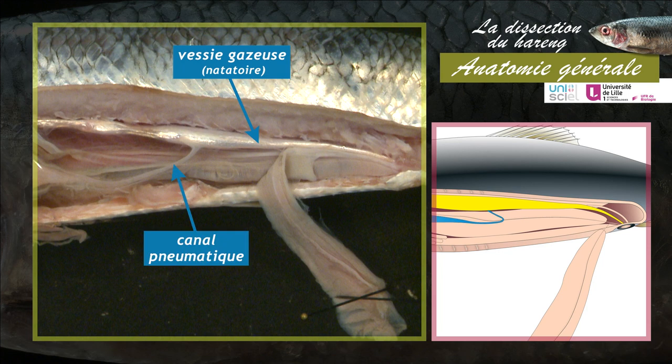Un deuxième conduit vésical permet l'évacuation du gaz par la papille anogénitourinaire.